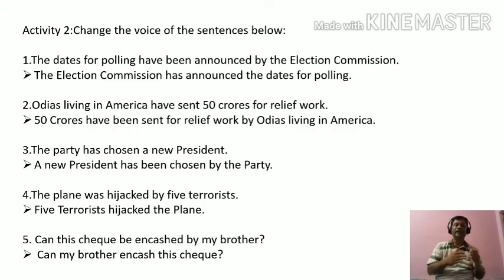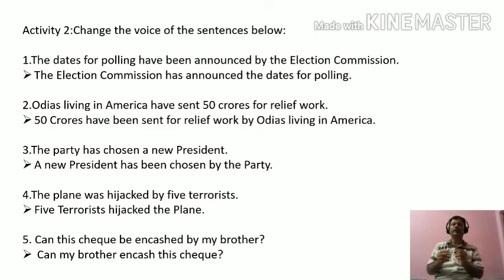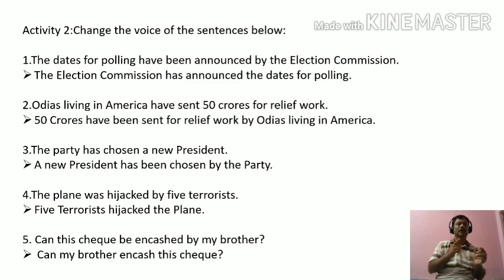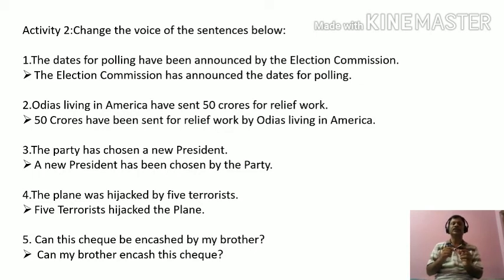Now the next sentence uses 'can' — a modal auxiliary — plus 'be' plus V3, which we use in passive. We have to change this into active. 'Can' remains as usual; the by-agent becomes the subject. Modal auxiliaries always take V1 immediately after them. 'Can my brother encash this cheque?' If we transfer this sentence into passive, the answer will be: 'Can this cheque be encashed by my brother?'